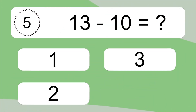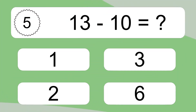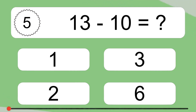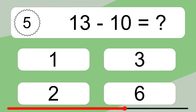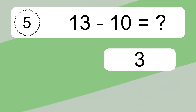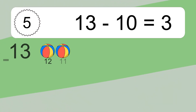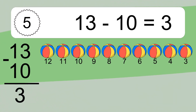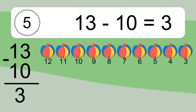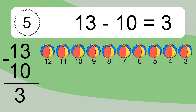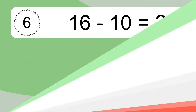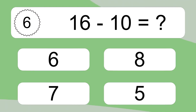13 minus 10 equals what? 13 minus 10 equals 3. Let's count it: 12, 11, 10, 9, 8, 7, 6, 5, 4, 3.